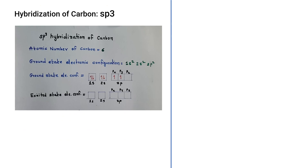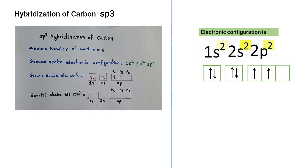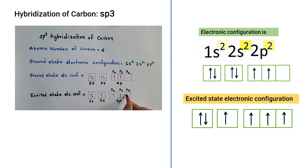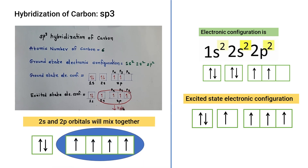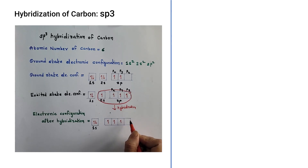Let us check sp3 hybridization of carbon. The ground state electronic configuration is 1s2 2s2 2p2. During bond formation, one of the 2s electrons gets excited to the vacant p orbital, so the excited state electronic configuration becomes 1s2 2s1 2p3. In sp3 hybridization, the 2s and 2p orbitals combine to form four new sp3 hybrid orbitals.